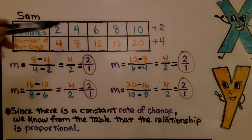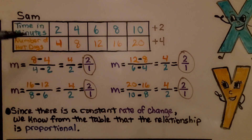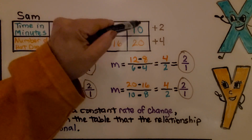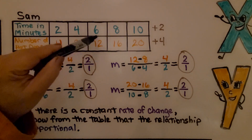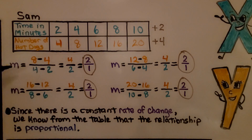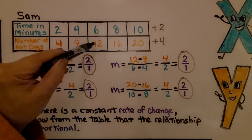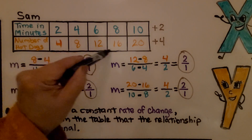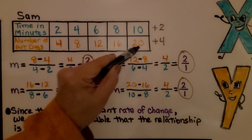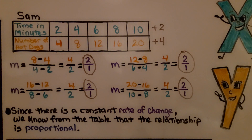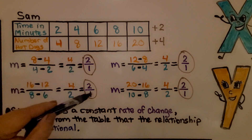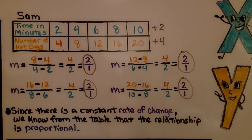Here is Sam's table — his actual data. In 2 minutes he ate 4 hot dogs. Looking at the table, the x-values increase by plus 2 each time, and the y-values increase by plus 4 — that's a constant rate of change. We can also take any two points and use the slope formula to confirm the rate of change is 2 over 1 every time. All the slopes are the same, so since there's a constant rate of change, we know from the table that the relationship is proportional.